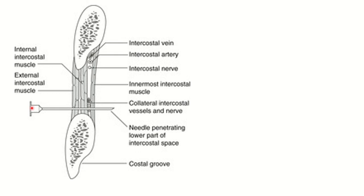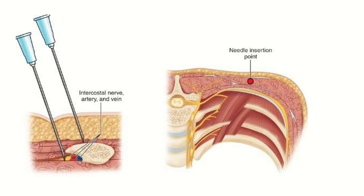To avoid injury to the intercostal nerve, always enter the needle through the upper border of the lower rib. Never enter the needle through the lower border of the upper rib. You should always identify the intercostal space, otherwise the needle will hit the bones. So this is all about the clinical anatomy of the intercostal groove.